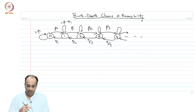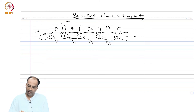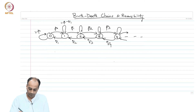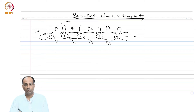A birth-death chain is a chain that looks like this. Specifically, the transitions are allowed only between consecutive states.